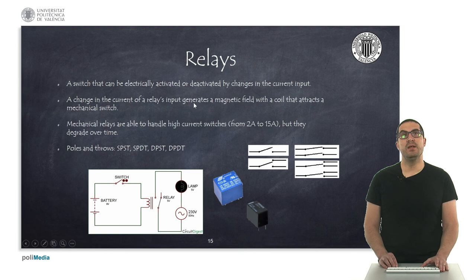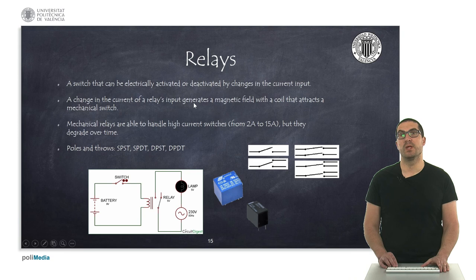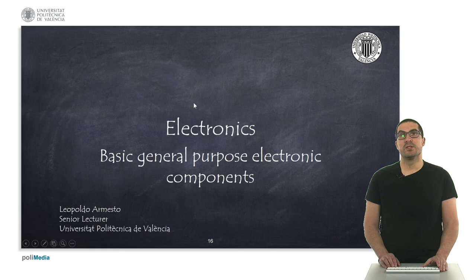Finally, we have relays, which are a special kind of switch that can be electrically activated or deactivated. We can think of them as a coil that attracts a mechanical switch, which then opens or closes a specific circuit. So we can electrically control another circuit, and they are able to drive high currents. Thank you for your attention — in this presentation we have given the very basic concepts of electronics. Thank you very much.